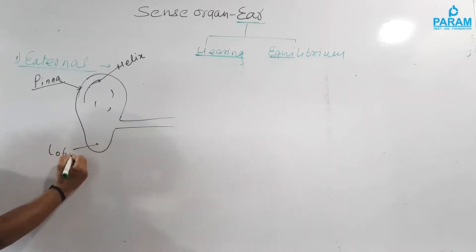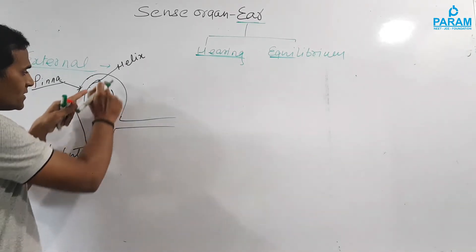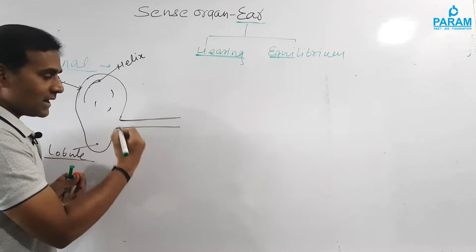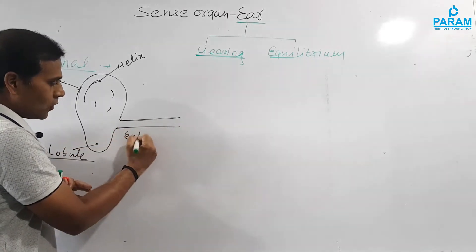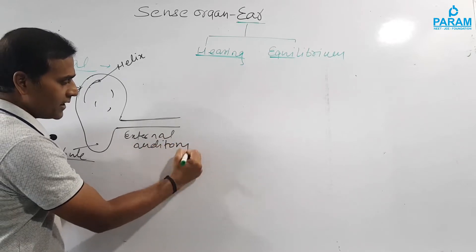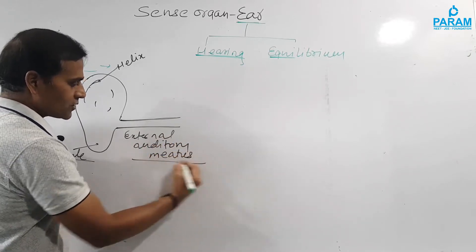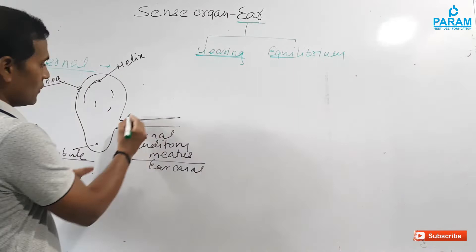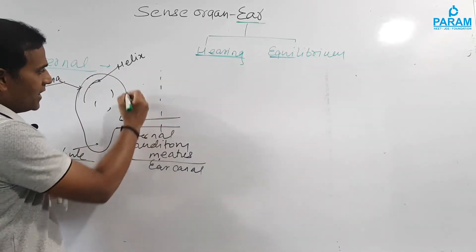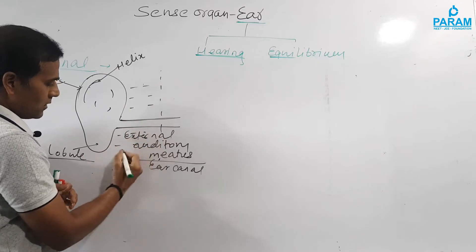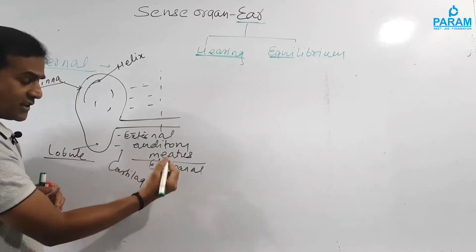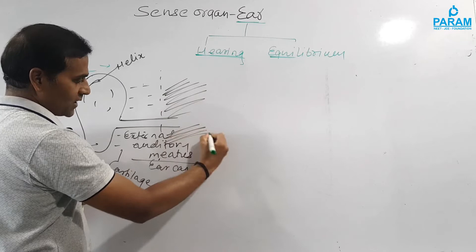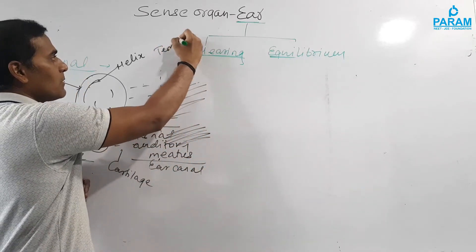The lower part of the pinna is termed the lobule. The pinna opens obliquely into the ear canal, also called the external auditory meatus. The ear canal is supported in the initial part by cartilage, and the next part is supported by bone — specifically the temporal bone.